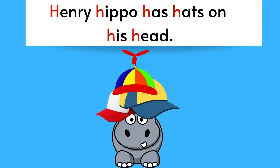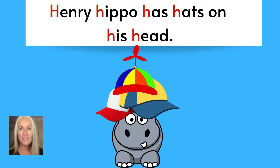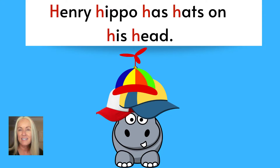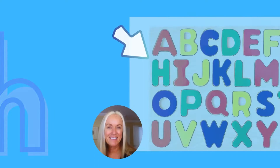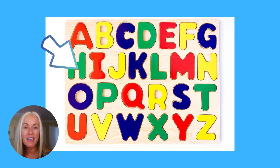Let's learn one more letter today. Ready? Listen carefully to this sentence: Henry Hippo has hats on his head. Did you hear the H sound at the beginning of a bunch of those words? Listen again: Henry Hippo has hats on his head. Say it with me: Henry Hippo has hats on his head. That sound you hear at the beginning of Henry, Hippo, hats, head, and even has is the letter H. This is the uppercase H and the lowercase H. They look different but they both sound like this. Here are the 26 letters of the alphabet, and there's the letter H, right there kind of towards the beginning of the alphabet. It sounds like this.